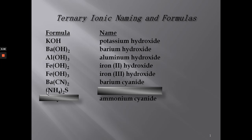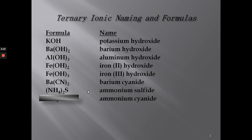For this compound, we have a polyatomic ion as the cation, and we have two of them because the subscript around the parentheses tells us we have two. On the polyatomic ion sheet, NH₄⁺ is ammonium and the sulfide anion of sulfur is S²⁻. We need two ammoniums for every one sulfide in order for them to be equal. That's ammonium sulfide.